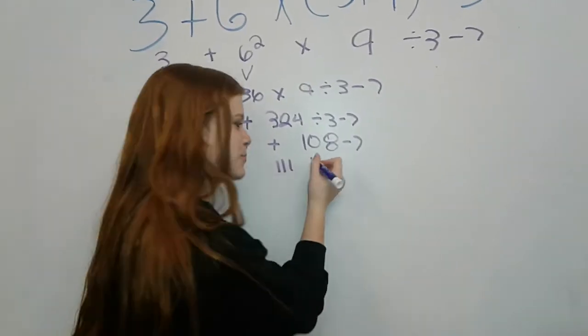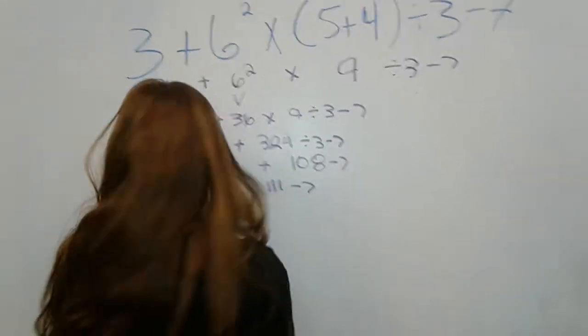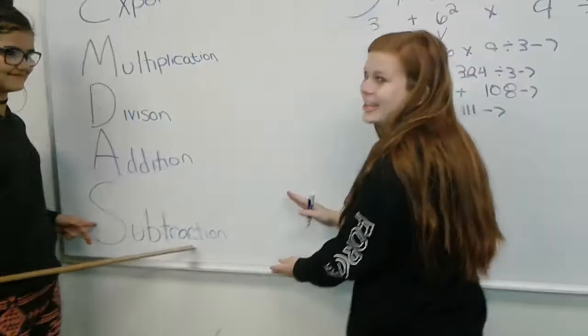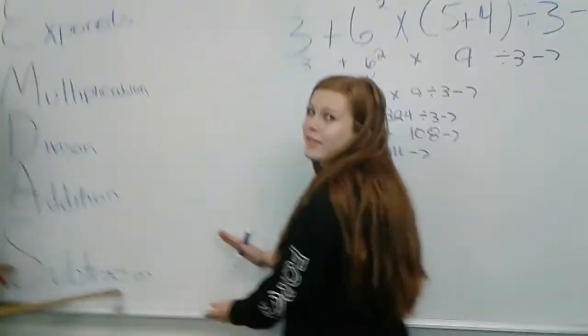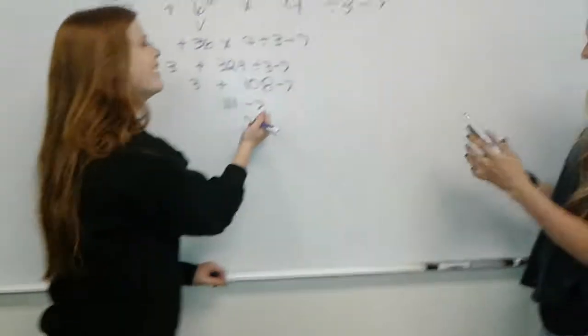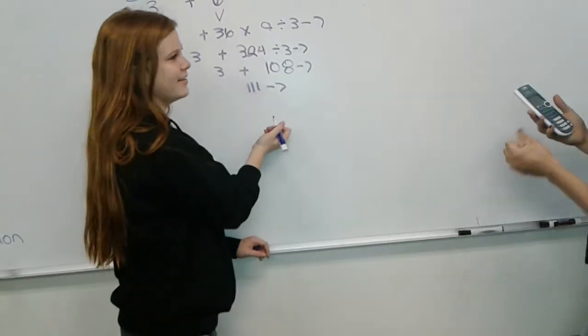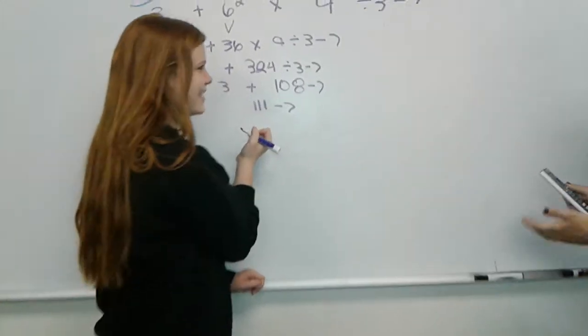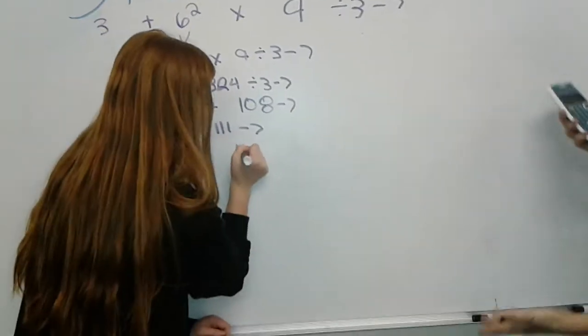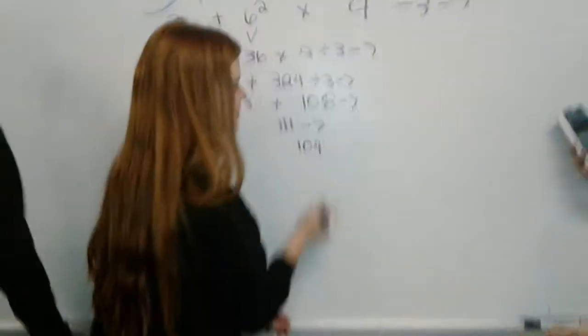111. Then you subtract it by 7, which is... Subtraction. Subtraction. And the PEMDAS is... 111 minus 7 is... 104. 104. And that's your answer!